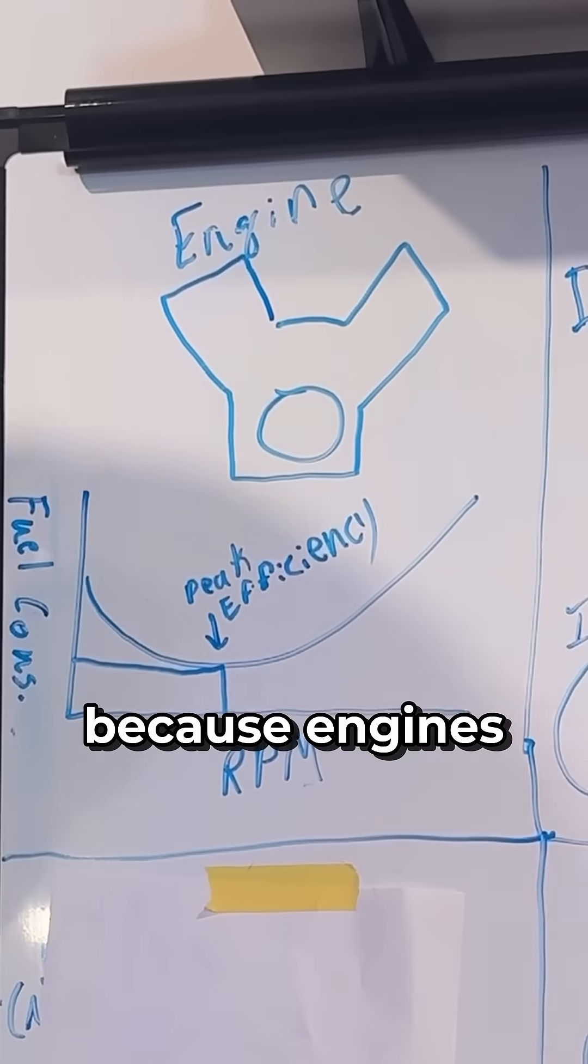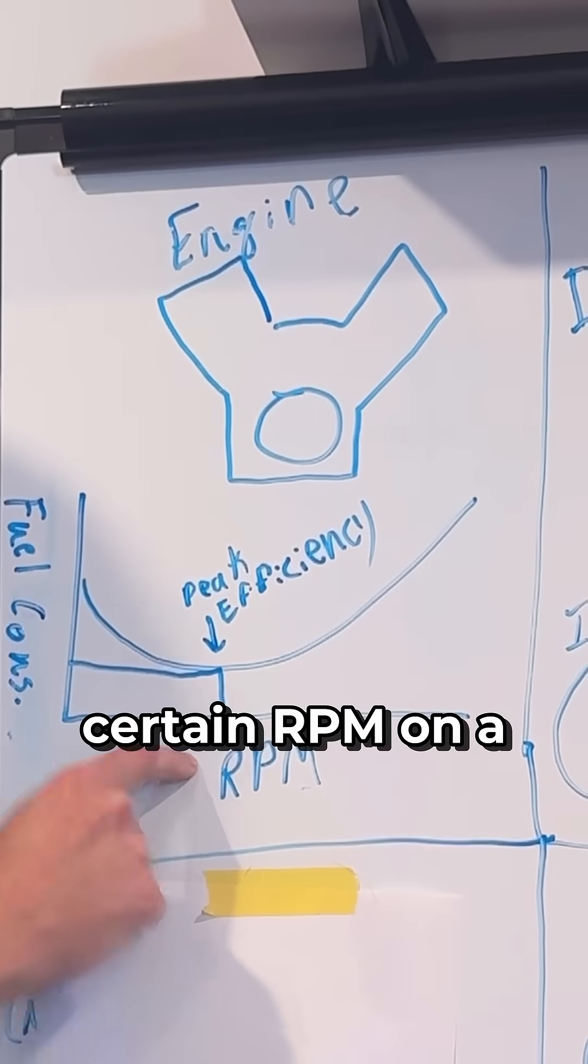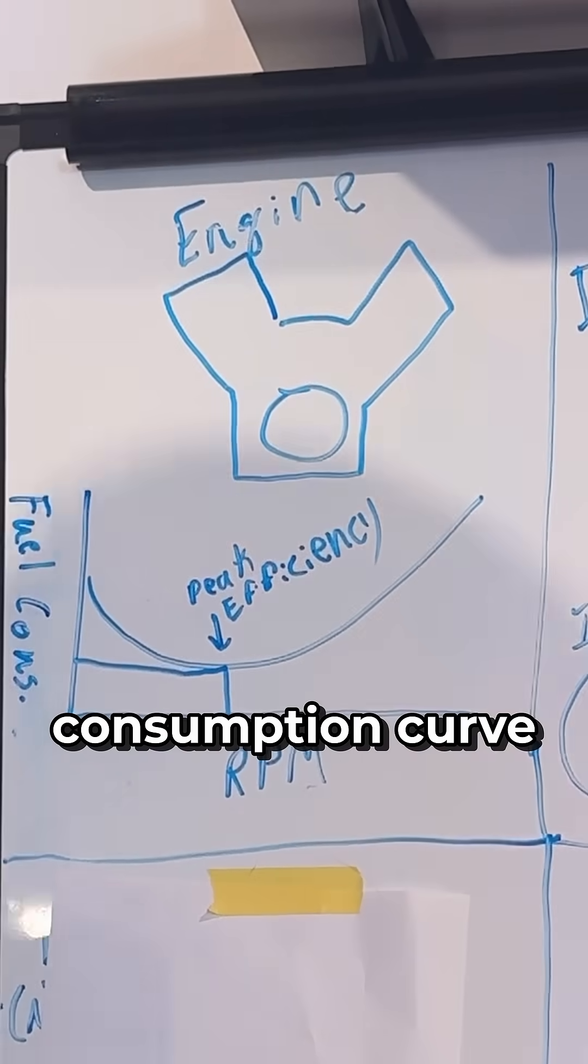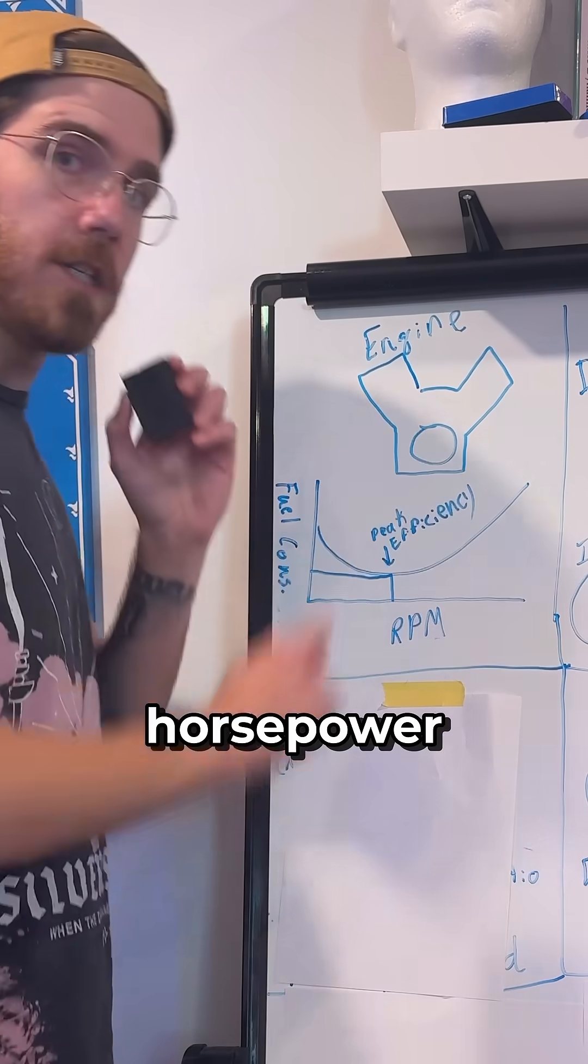That matters because engines have a peak efficiency at a certain RPM on a fuel consumption curve. We also see that in the RPM versus torque or RPM versus horsepower.